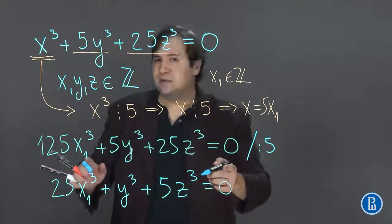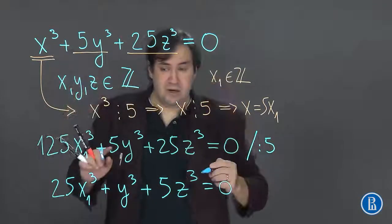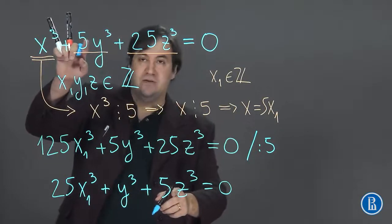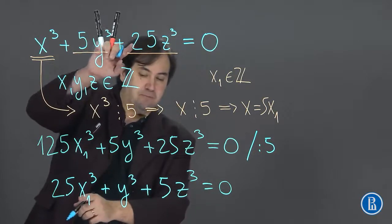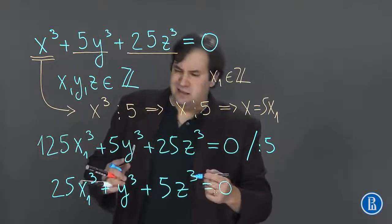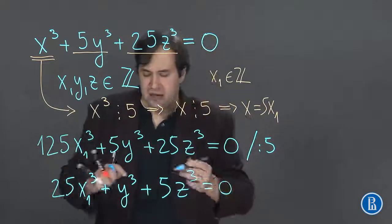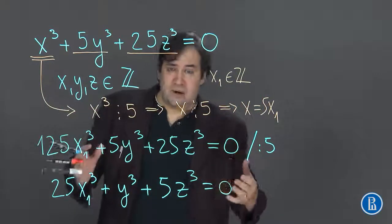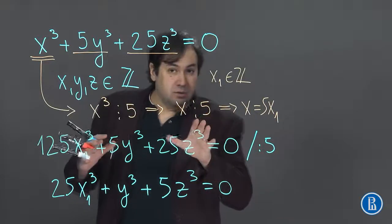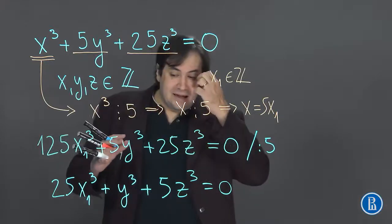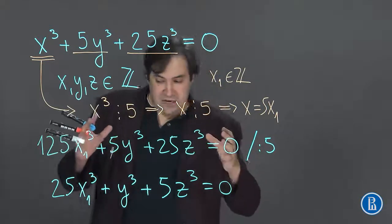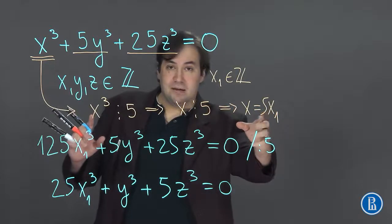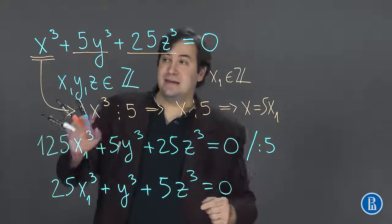This equation looks very much like the initial one. We have a cube, we have a cube multiplied by 5 and we have a cube multiplied by 25. This means that we can do the same thing with this equation here. But the truth is that this is a really important step in solving this equation, because x₁ the new x is less than the old one.